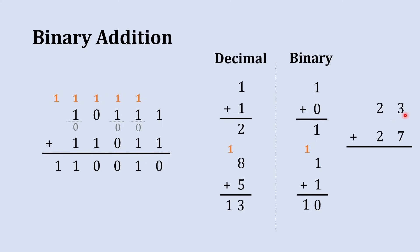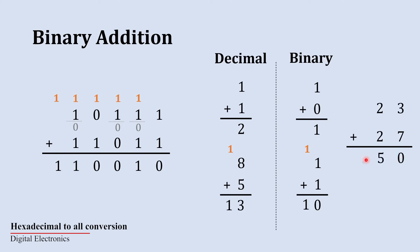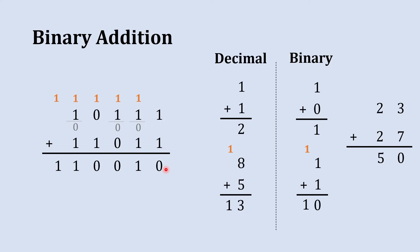The decimal equivalent of the first number is 23 and the second is 27, so 23 plus 27 is 50. You can verify that the binary result we obtained is the equivalent of 50. That completes the two-layer binary addition.